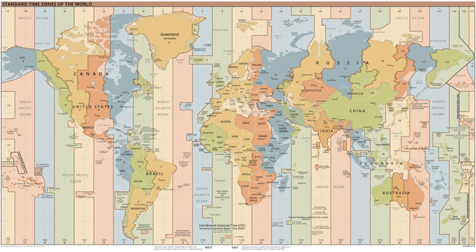UTC is also the time standard used in aviation, e.g. for flight plans and air traffic control clearances. Weather forecasts and maps all use UTC to avoid confusion about time zones and daylight saving time. The International Space Station also uses UTC as a time standard. Amateur radio operators often schedule their radio contacts in UTC, because transmissions on some frequencies can be picked up in many time zones. UTC is also used in digital tachographs used on large goods vehicles under EU and AETR rules.